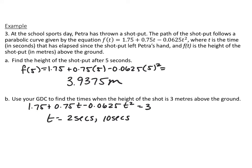Part A: find the height after 5 seconds — plug in 5 for t and you get 3.9375 meters above the ground. For Part B, use the graphing calculator to find when the height is 3 meters. I set the function equal to 3, graphed both y₁ and y₂ = 3, and found where they intersected: at 2 seconds and 10 seconds.